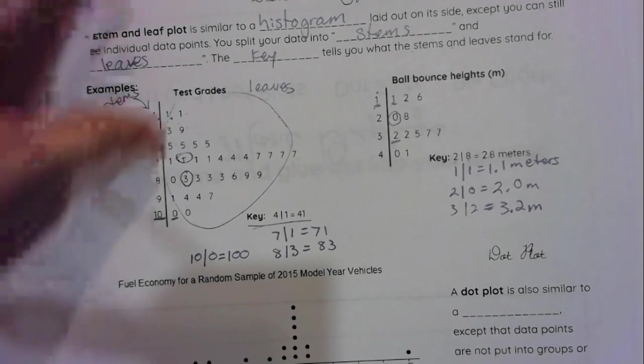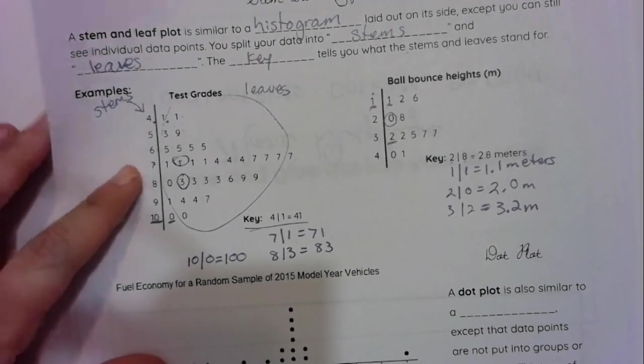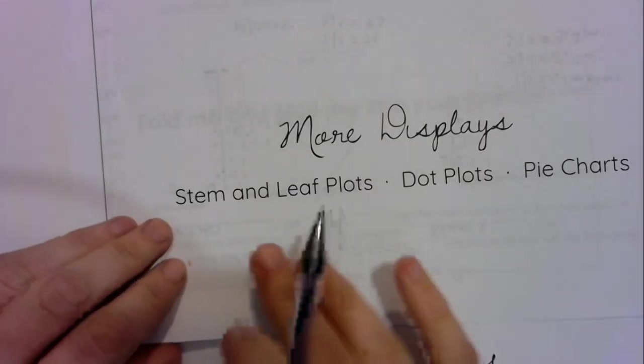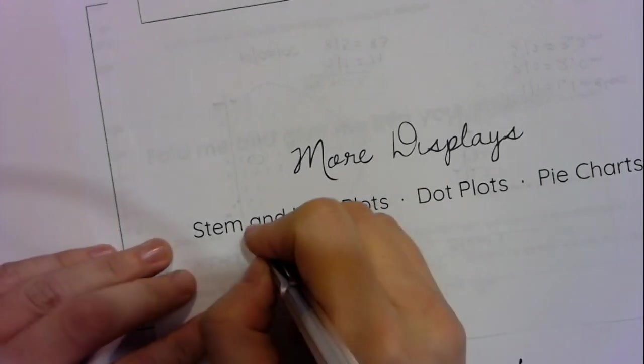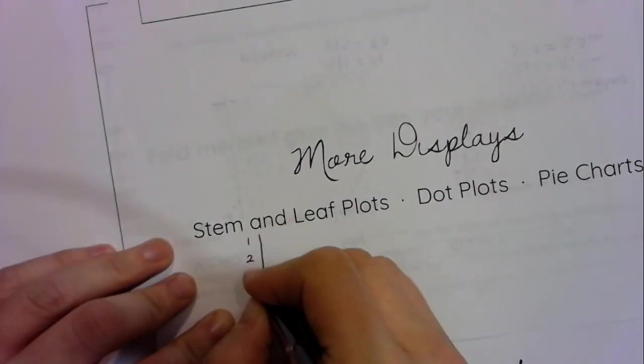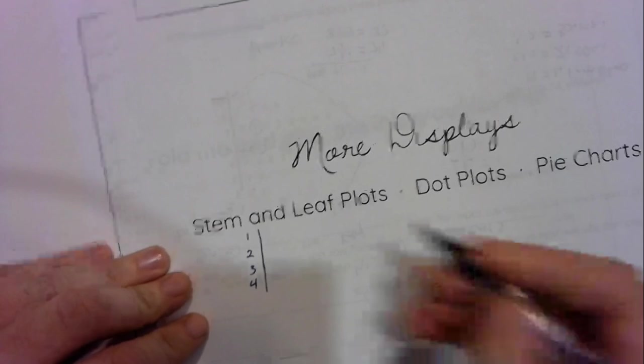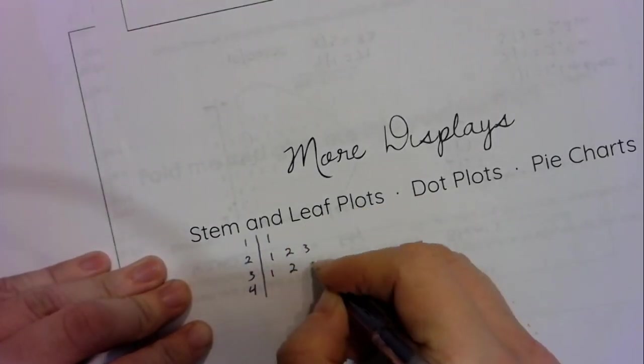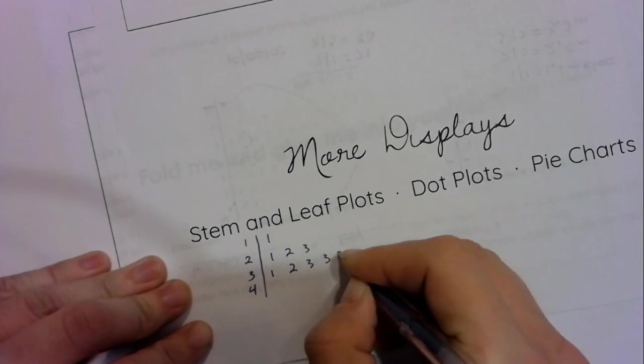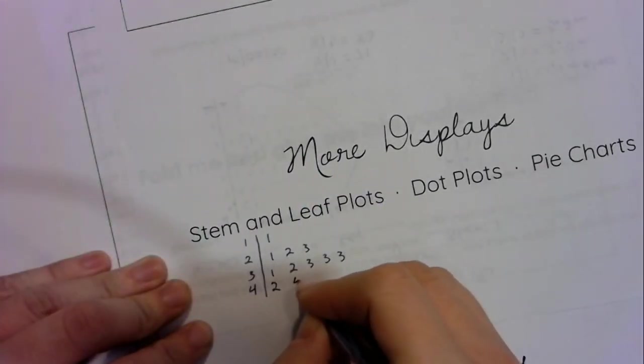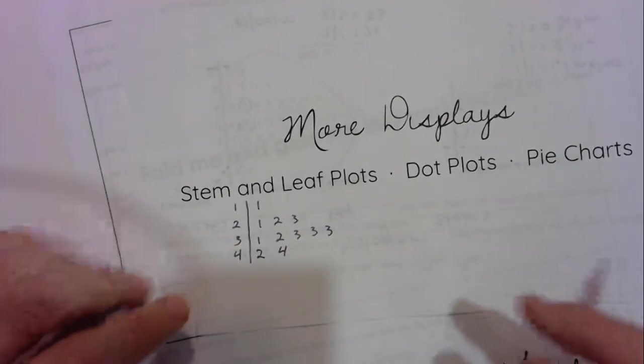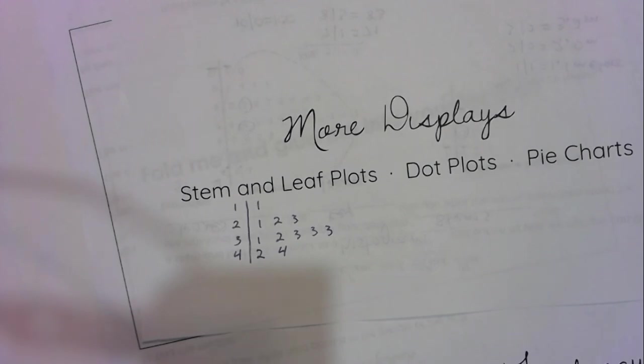So that is a stem and leaf plot. And what I would like you to do on the front, you're going to sketch something that looks like this so that when you glance at your notes, you know exactly what type of graph you're looking at. I'm just going to do a really simple example. I'm just making up some numbers here. Don't have to get too specific. Just make up some numbers to look like that. So you can glance at that and go, oh, that's a stem and leaf plot.